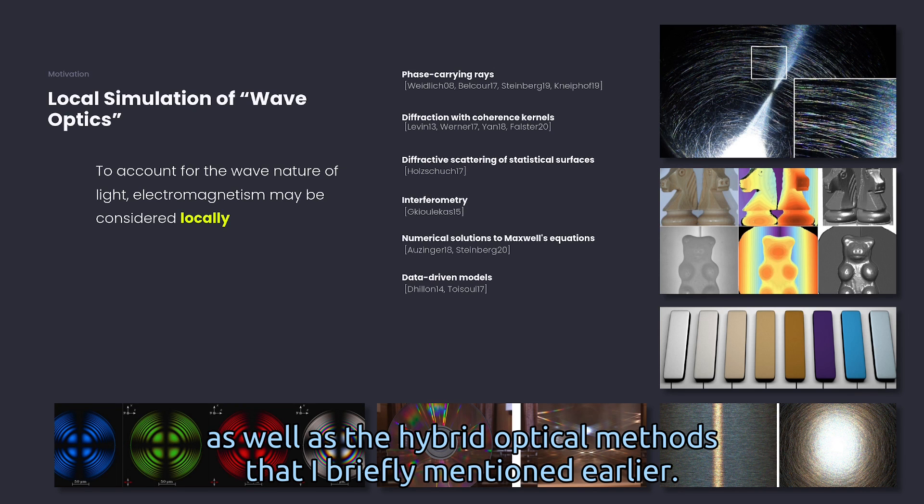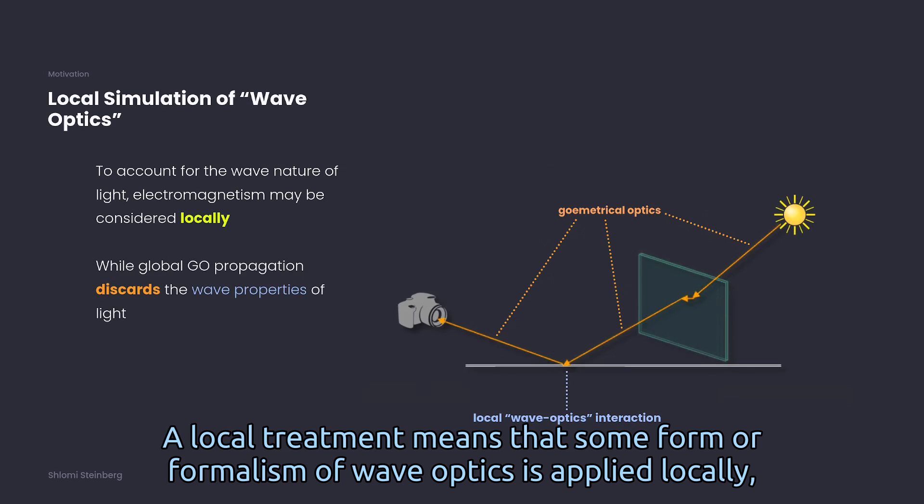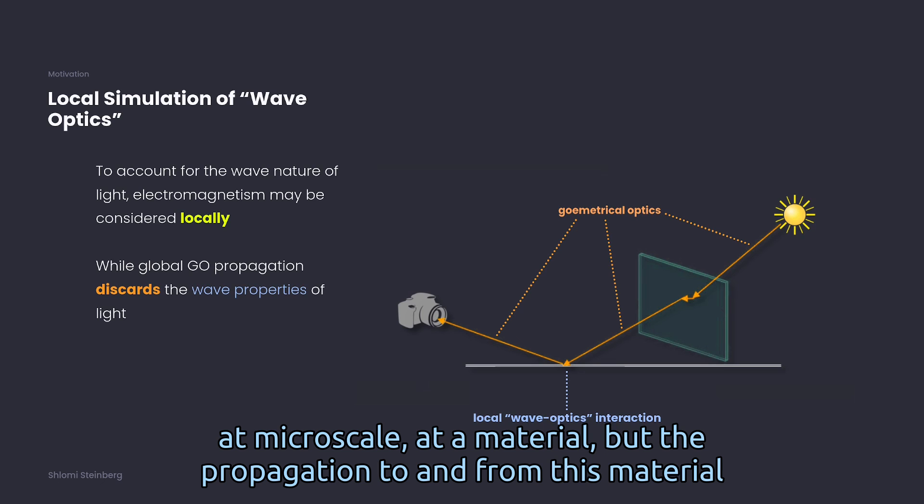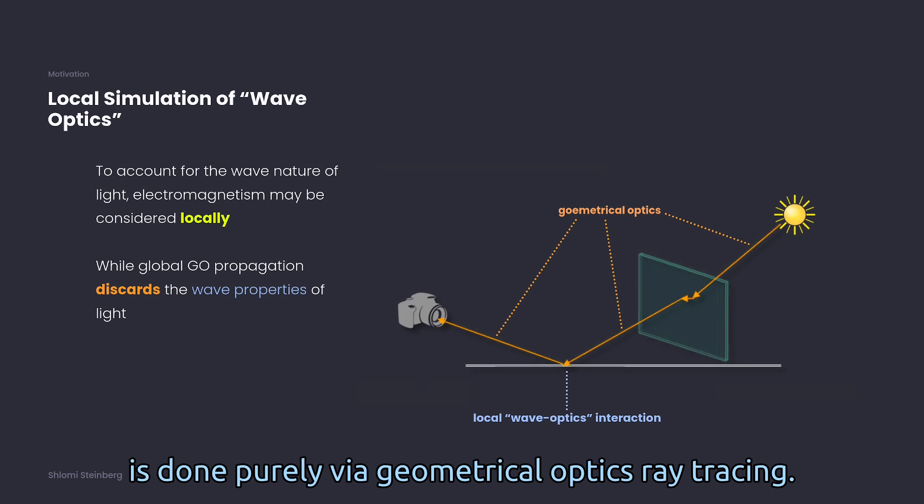A local treatment means that some formalism of wave optics is applied locally, at microscale, at a material, but the propagation to and from this material is done purely via geometrical optics ray tracing.